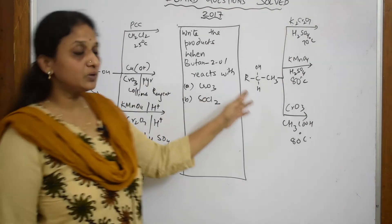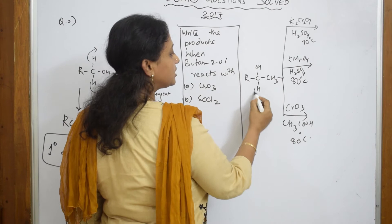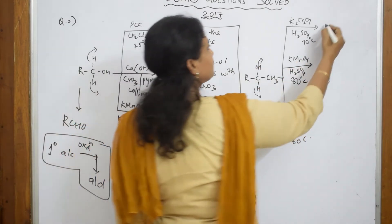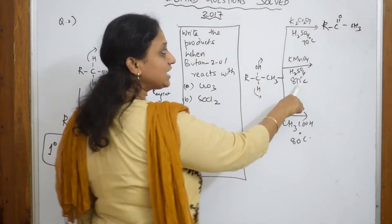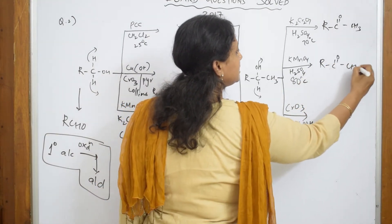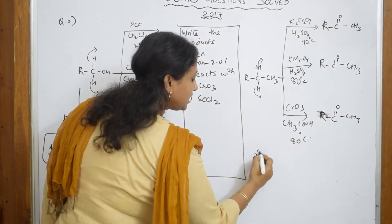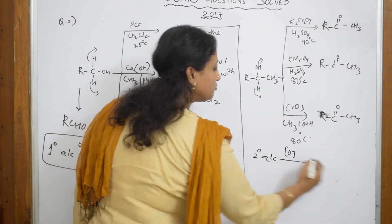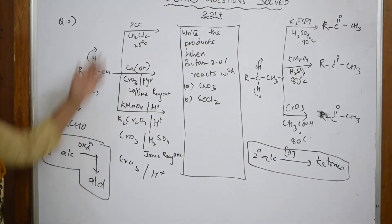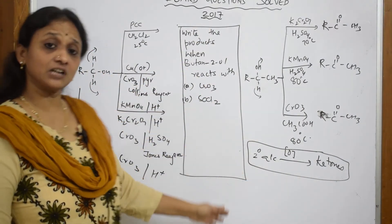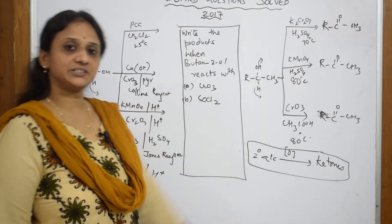Now for a secondary alcohol, with all these oxidizing agents, you again remove the hydrogen. What you're left with is a –COCH3 group — a ketone. The conclusion: secondary alcohols on oxidation give ketones. So remember: primary alcohols give aldehydes, secondary alcohols give ketones with all these oxidizing agents. Write down and list all these oxidizing agents and remember that clue.